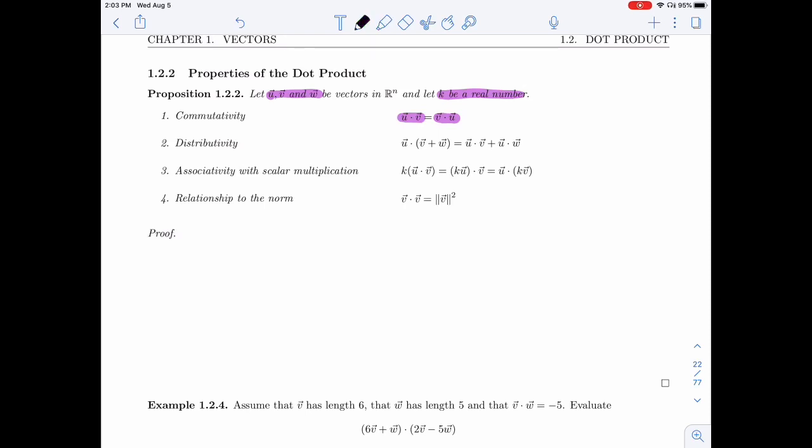Then I can distribute the dot product over a sum of vectors. That means that I can multiply that u in and I will get u dot v plus u dot w.